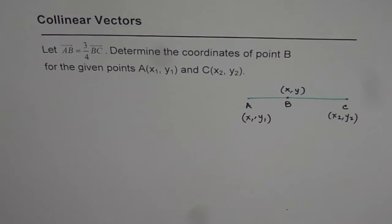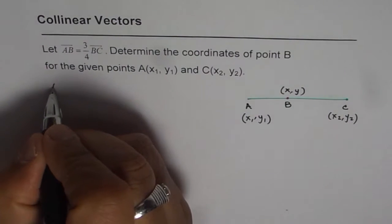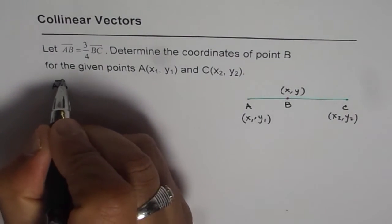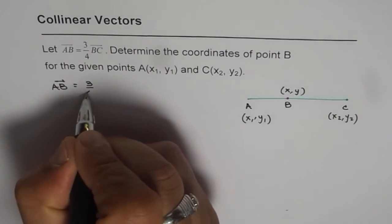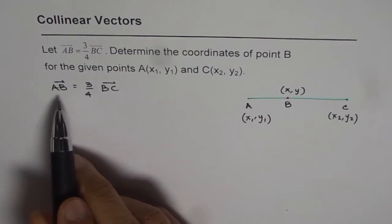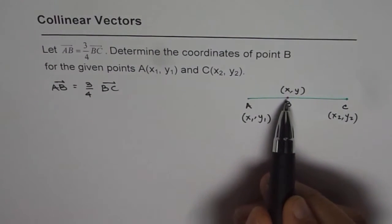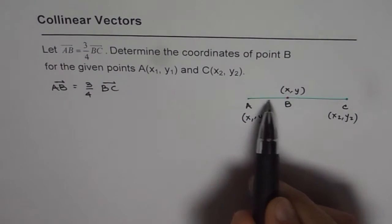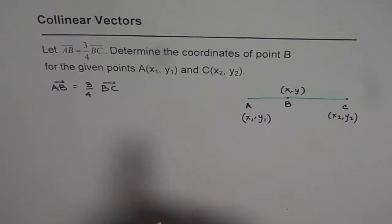We are given that AB equals three-fourths of BC. Since AB is a scalar multiple of BC, both are collinear vectors. That is how we can draw them in a straight line.